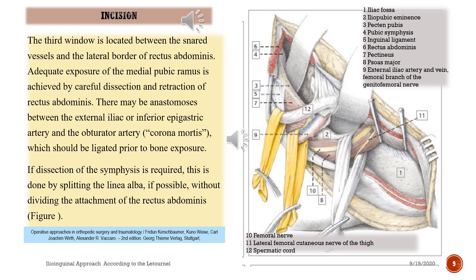The third window is located between the snared vessels and the lateral border of rectus abdominis. Adequate exposure of the medial pubic ramus is achieved by careful dissection and retraction of rectus abdominis. There may be an anastomosis between the external iliac or inferior epigastric artery and the obturator artery — corona mortis — which should be ligated prior to bone exposure. If dissection of the symphysis is required, this is done by splitting the linea alba, if possible without dividing the attachment of the rectus abdominis.